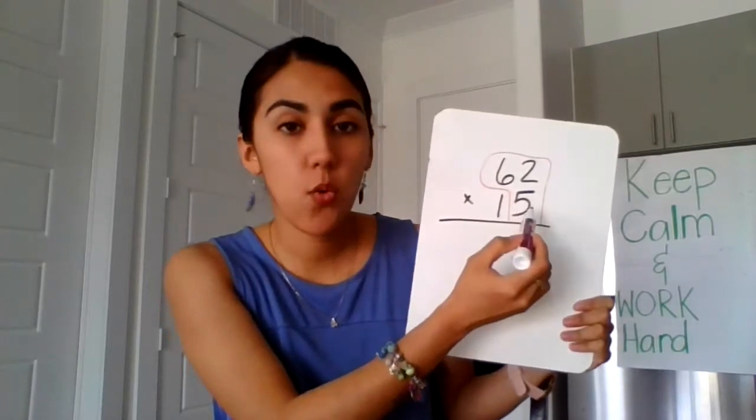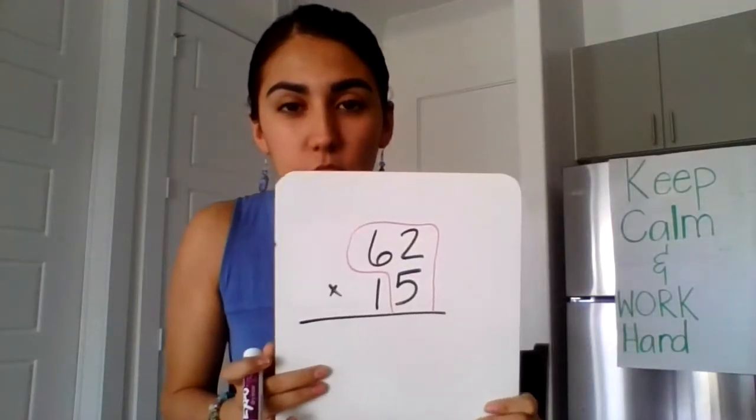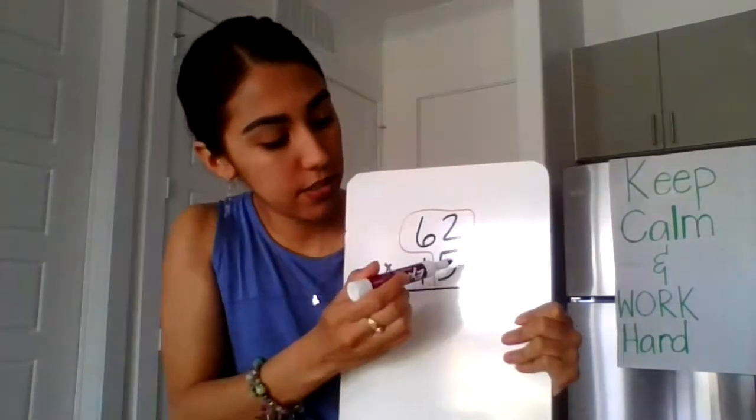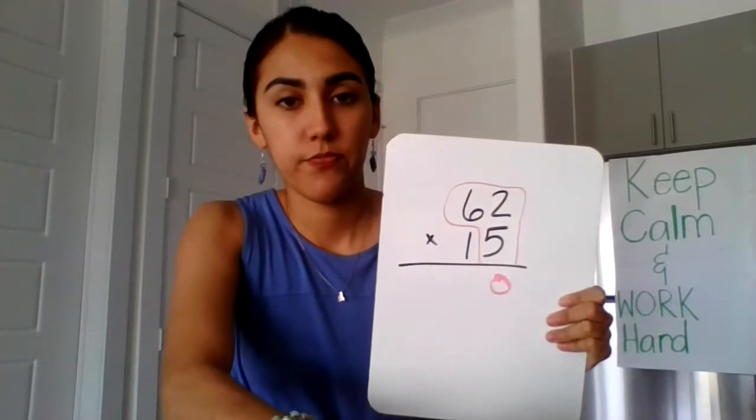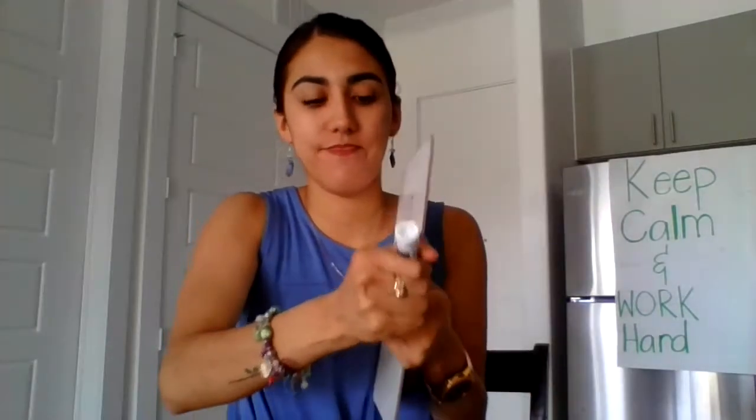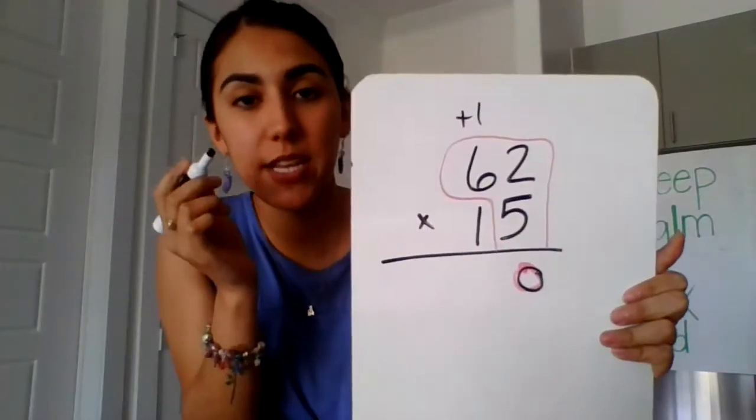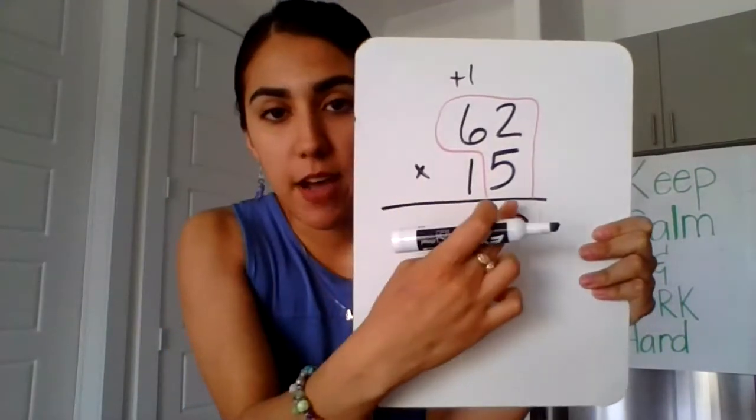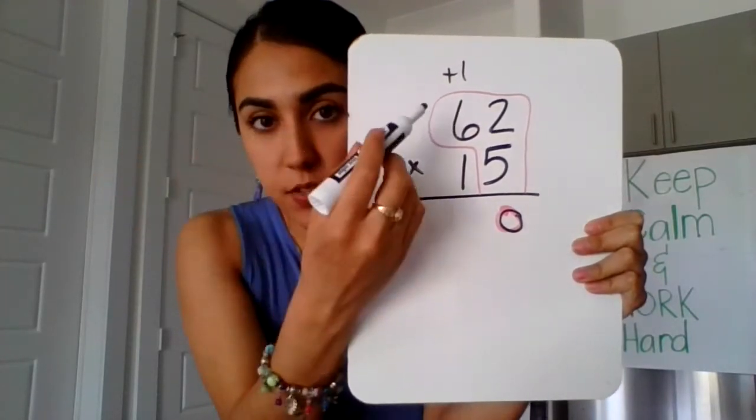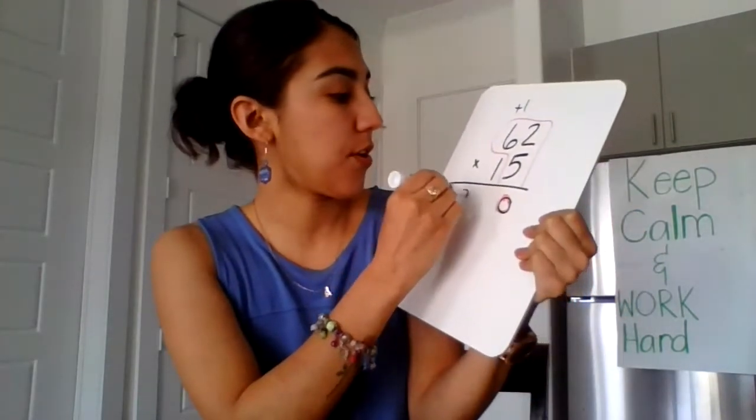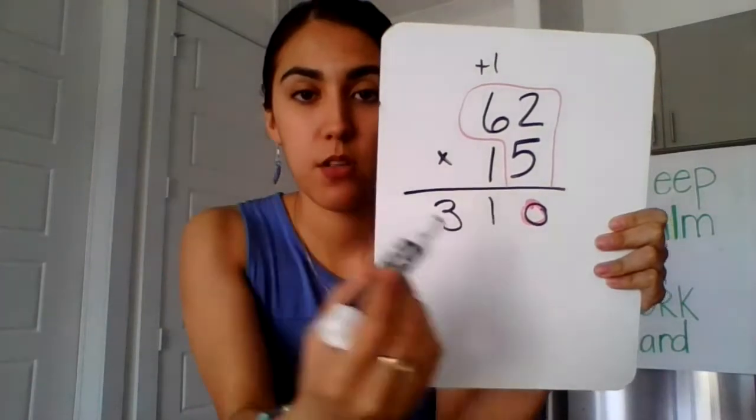And we're going to start in the ones place. We're going to multiply this 5 times the 2 and the 6. So 5 times 2 equals 10. So I'm going to drop my 0 and carry the 1 over to the next place value. 5 times 6 equals 30 plus 1 equals 31. And you're going to write that down there, 31.